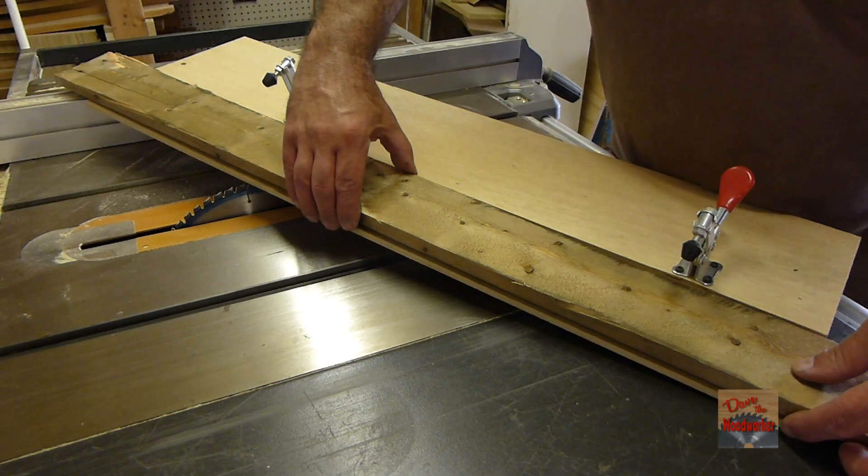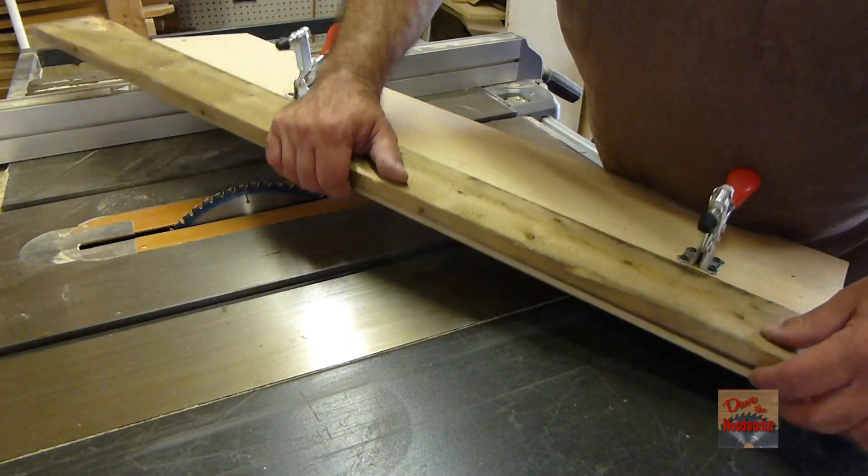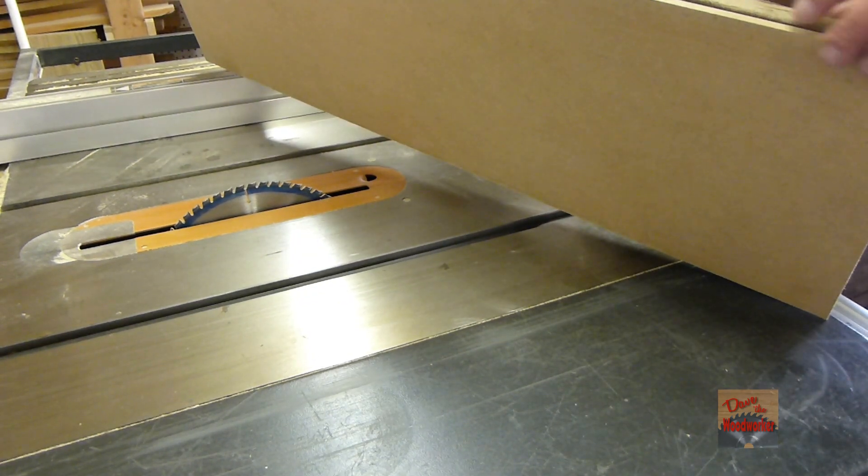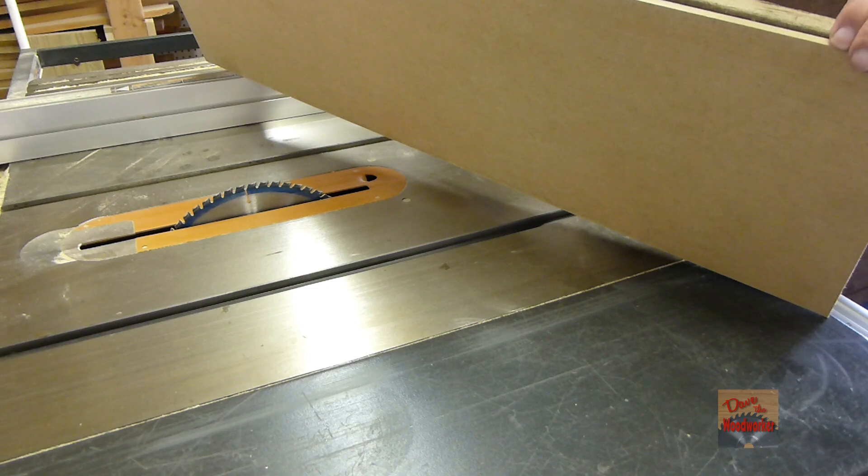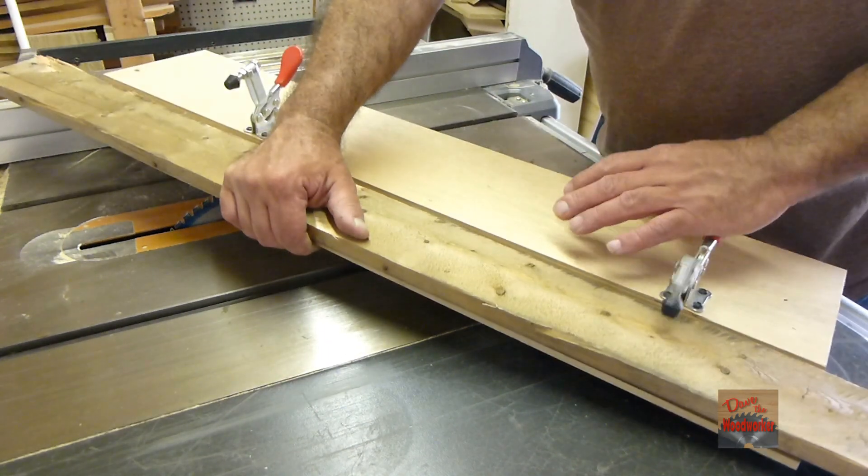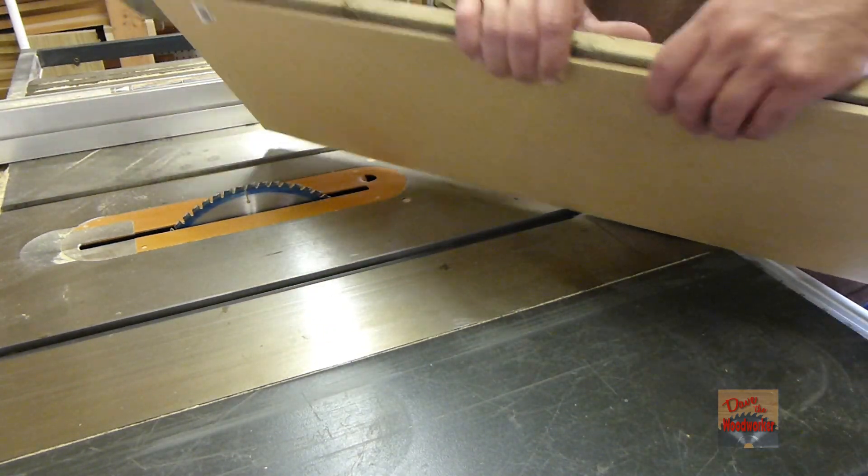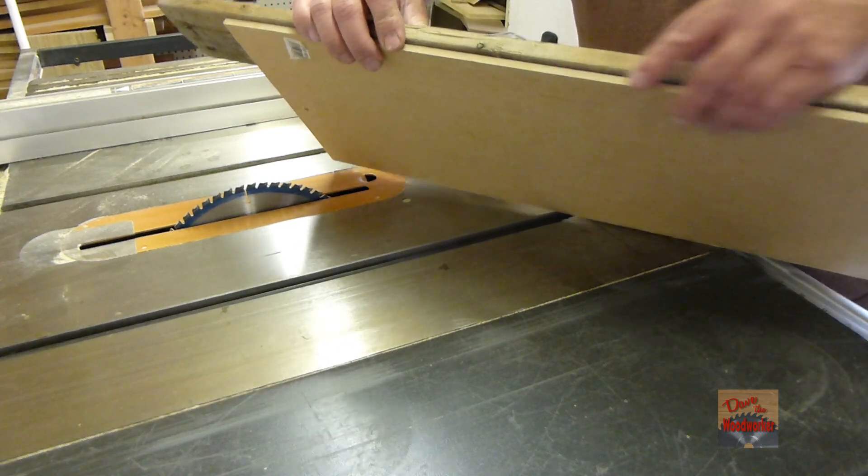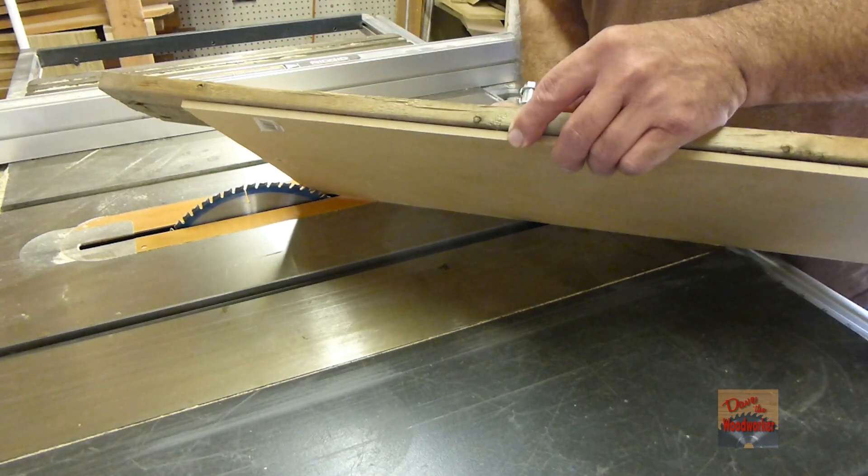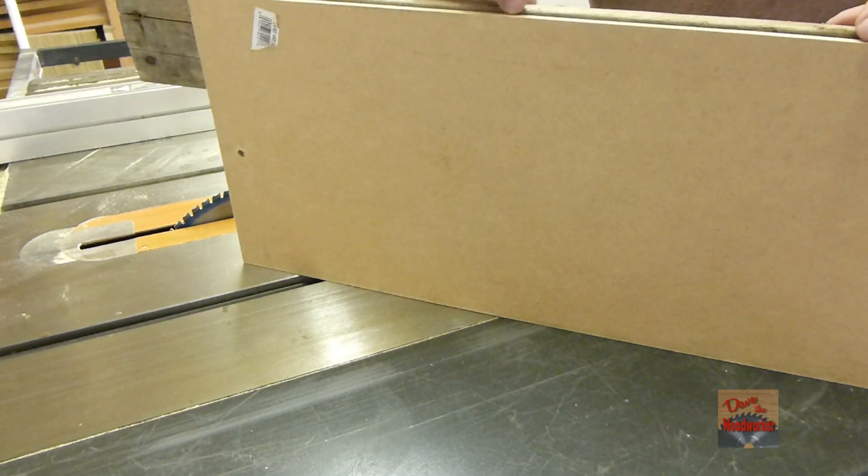So you want to line this up with the saw blade here. You want to stick it above it a little bit and clamp it down. Move this down here where it's above it a little bit and clamp it down. It's going to look like it right there.